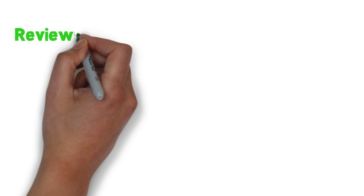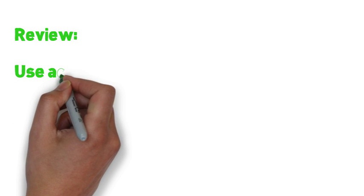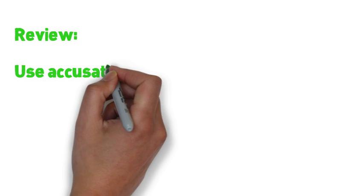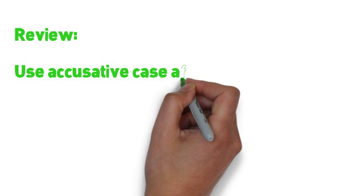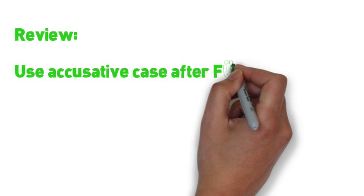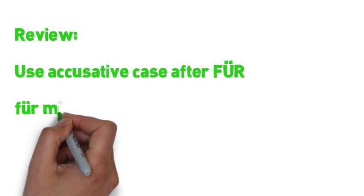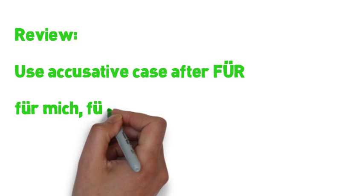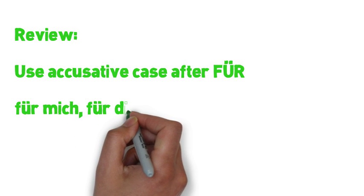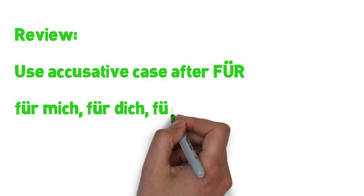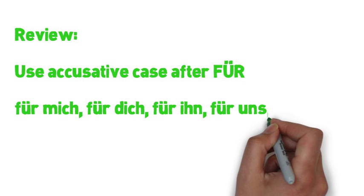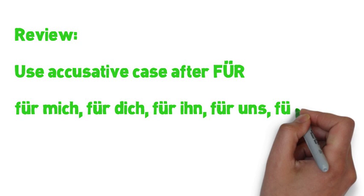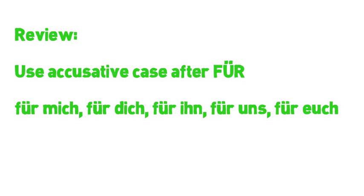Finally, let's review the essentials of accusative case prepositions. After the preposition FÜR, and certain other prepositions that you'll learn more about later, you need to use the accusative case rather than the nominative case. Specifically, you will need to use phrases like FÜR MICH, FÜR DICH, FÜR IHN, FÜR UNS, and FÜR EUCH, rather than the nominative case versions of those pronouns.